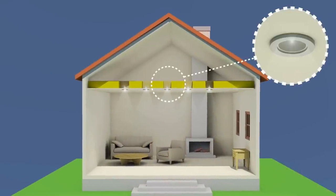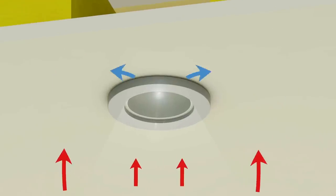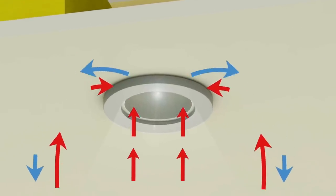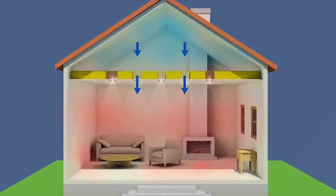Downlights in attic ceilings are a very weak point in the fight against heat loss. Gaps between the light fitting and plasterboard allow warm air to escape and cold air to enter the living room.